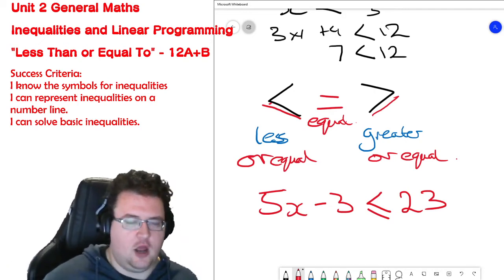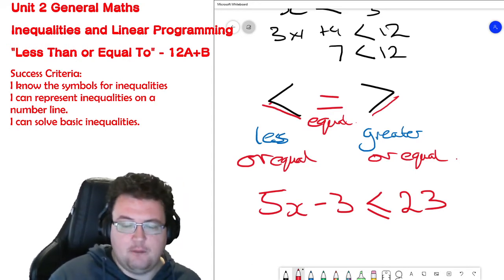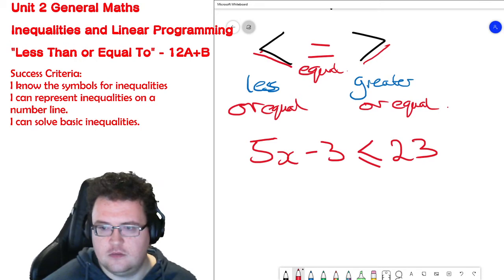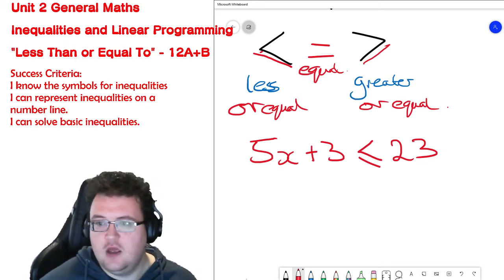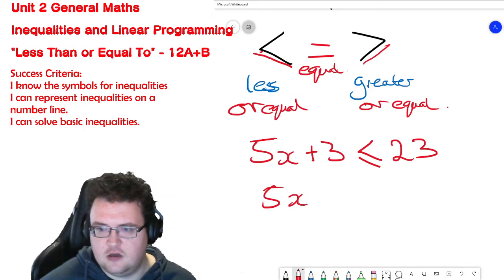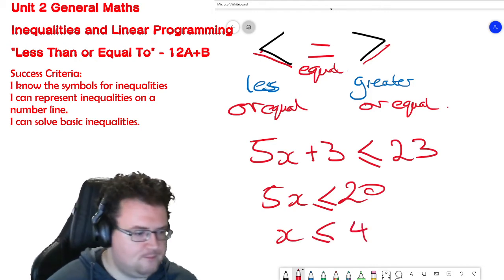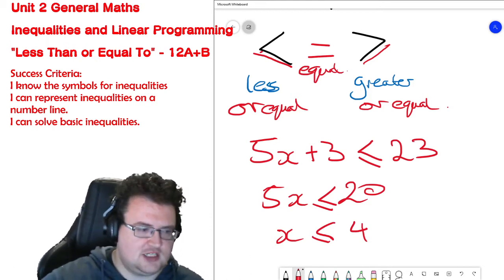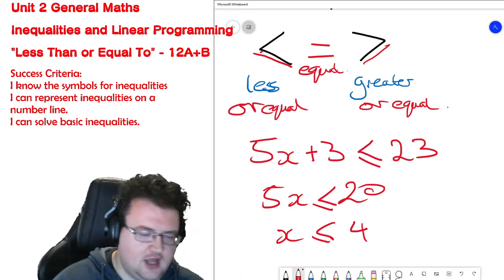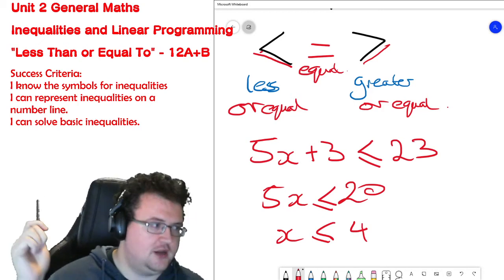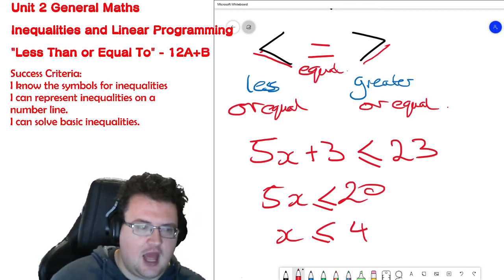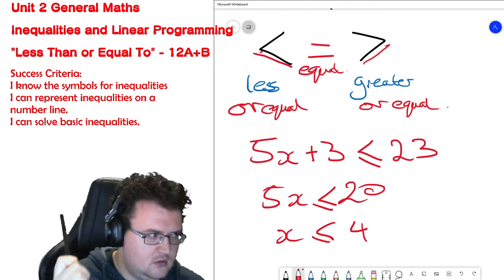I would solve it like I would any sort of normal equation, but I just have to remember that I am using an inequality symbol instead of an equal sign. I'll make that plus 3, make it easier on myself. Minus 3 from both sides: 5x is less than or equal to 20. x is less than or equal to 4. Can I have x is 1, x is 2, x is 3, x is 3.9, 3.99, 3.9999, etc.? All values of x up to and including 4 are valid answers to the statement.